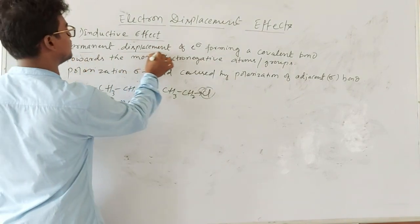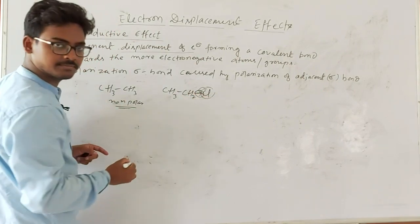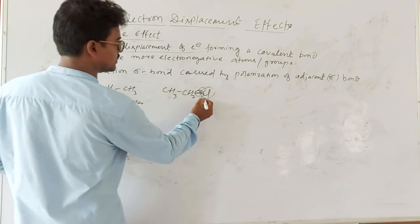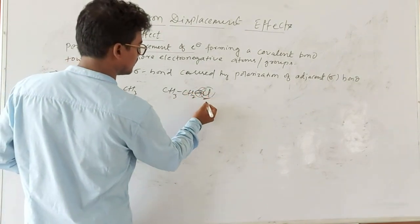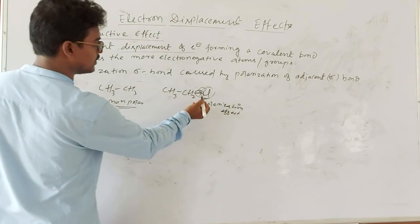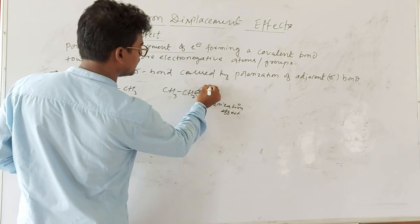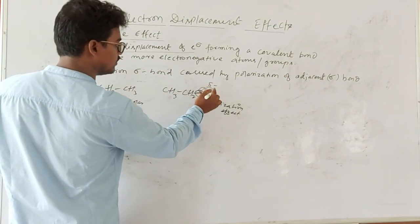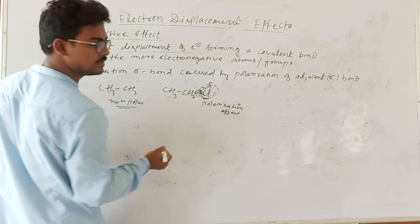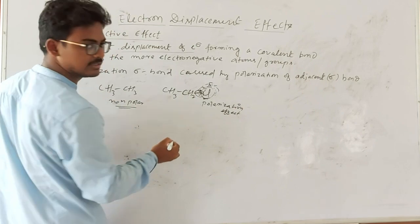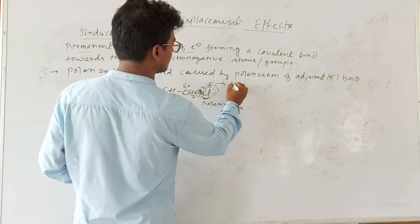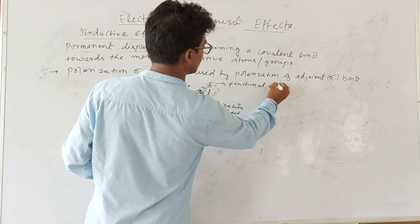This is known as the permanent displacement of electrons. The bond pair electrons shift towards the more electronegative element, causing polarization. The electron cloud shifts towards chlorine, giving chlorine more electron density — marked as delta negative (δ⁻) — while carbon, being less electronegative, is marked as delta positive (δ⁺). The delta symbol represents fractional charge.